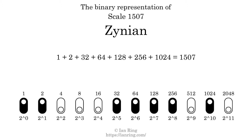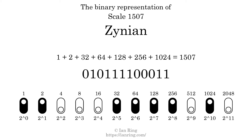That is why the scale number, in decimal, is 1507. The scale number not only enumerates the scale with a unique index, but it also literally describes the tonal content of the scale. Represented as a binary number in base 2, the scale number is 010111100 11.